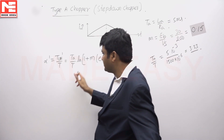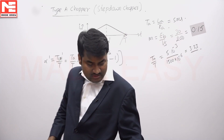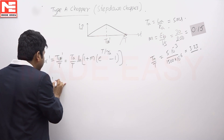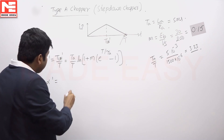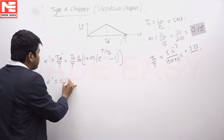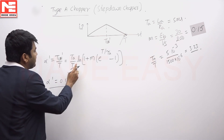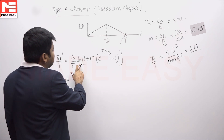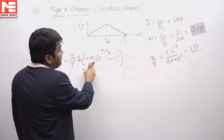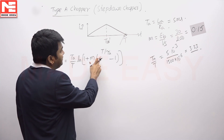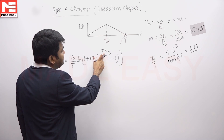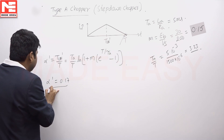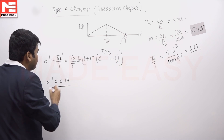Substituting all those parameters in this equation, we get alpha_dash is equal to 0.17. Substituting T_A by T as 3.33, ln of M value is 3.33, and this ratio T by T_A. The final value of alpha_dash is 0.17.